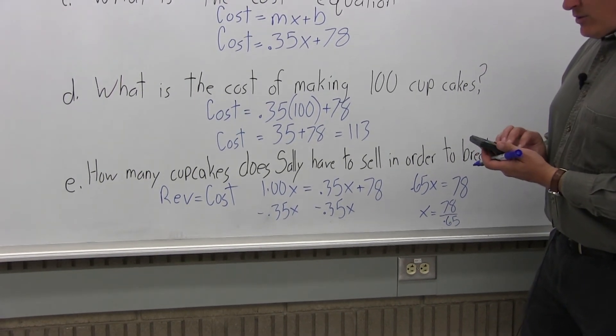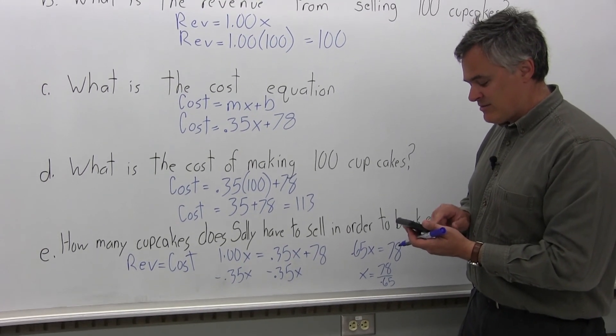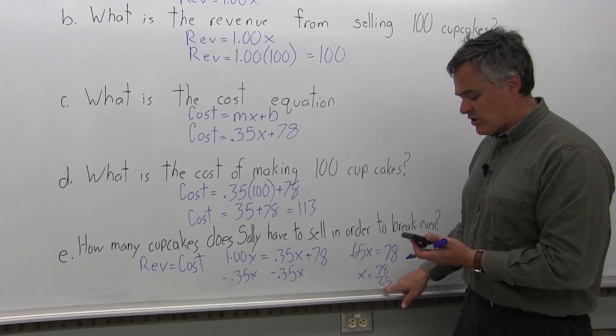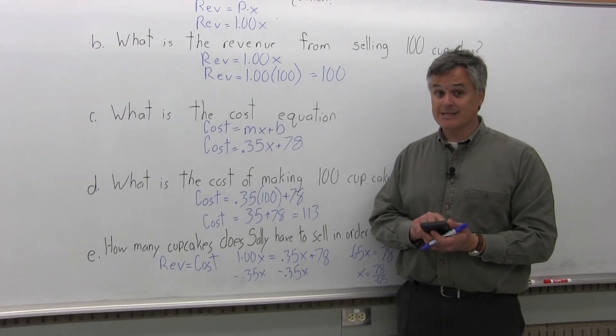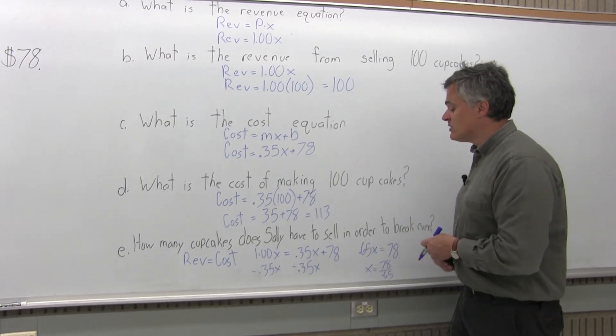Now that's not something that you can do easily in your head. So with a calculator, I will enter the numerator first, 78, divided by, put in the denominator. Don't forget the decimal. It's not 65, it's .65. Makes a big difference. And the answer comes out to X equals 120.